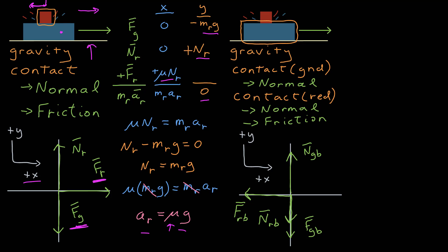This force points to the left. I know that because as red was sliding to the back of blue, blue was moving to the right relative to red. And the frictional force of red on blue then points in the opposite direction of the motion of the object, blue, relative to the agent, which is red.